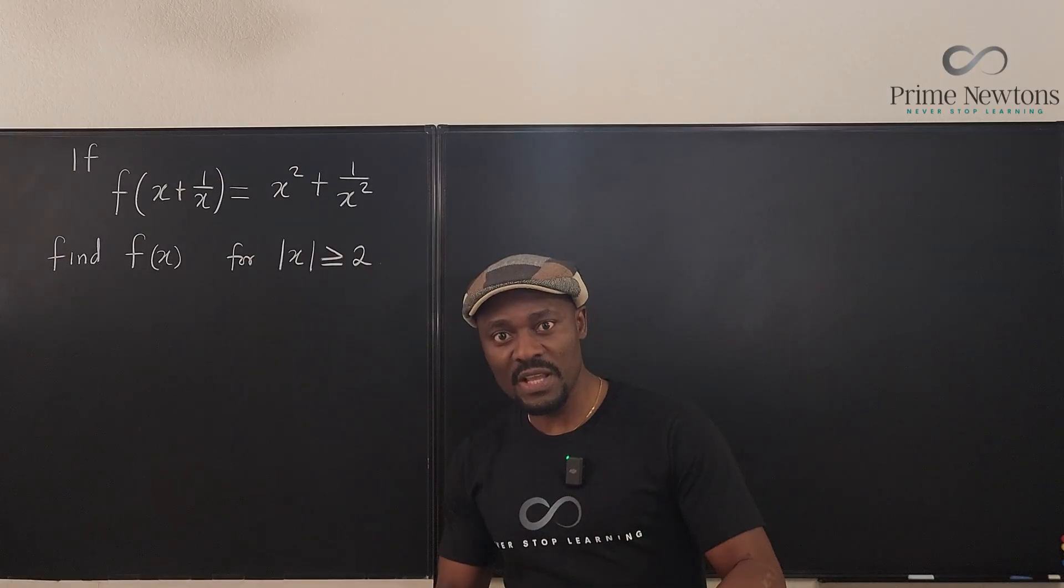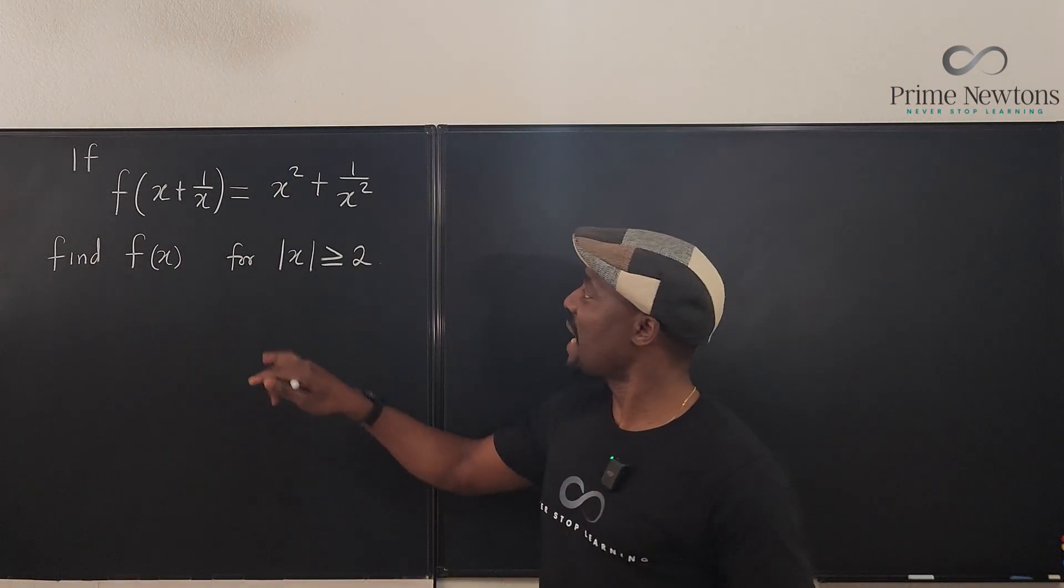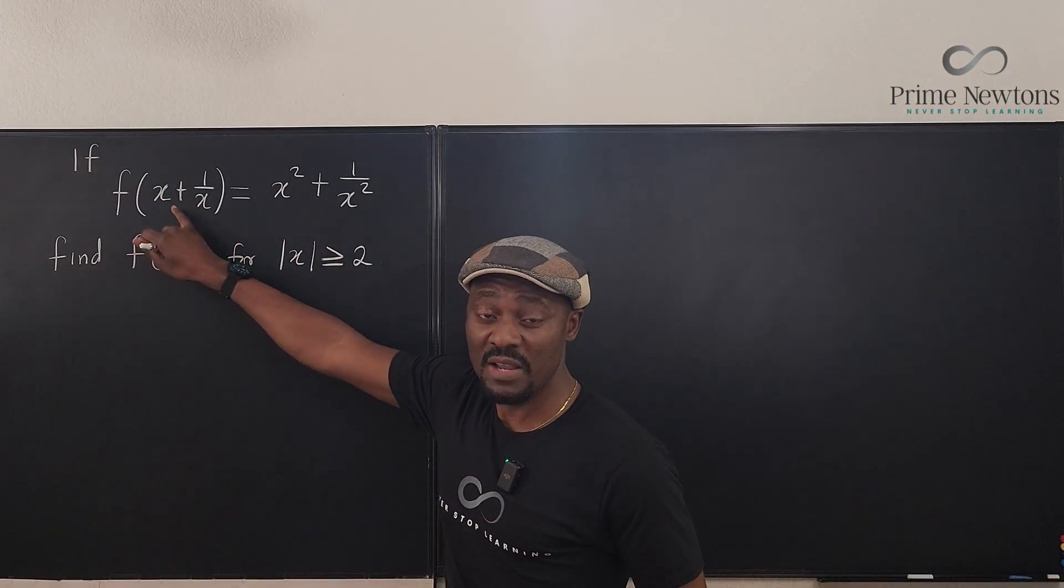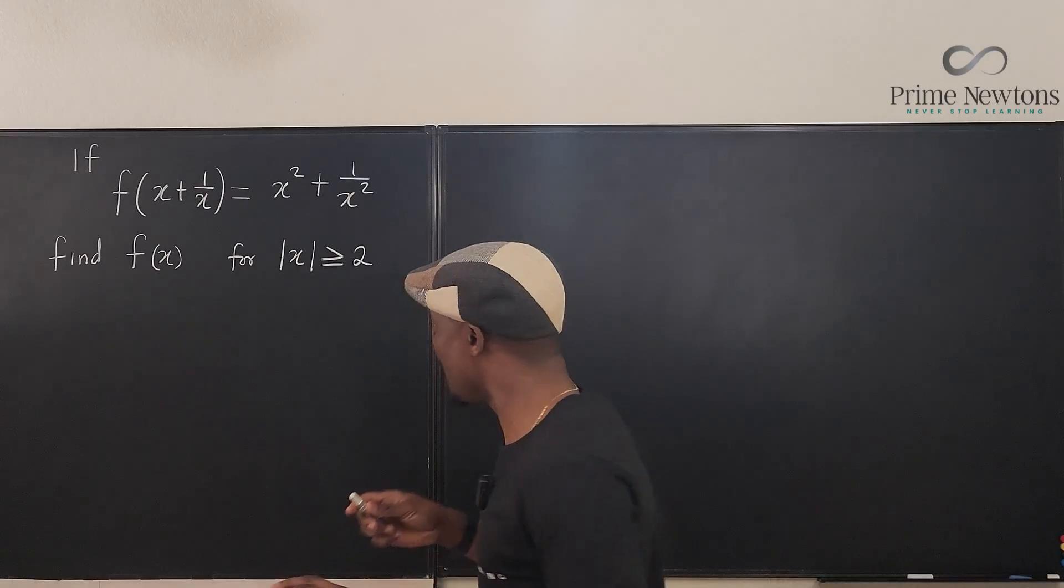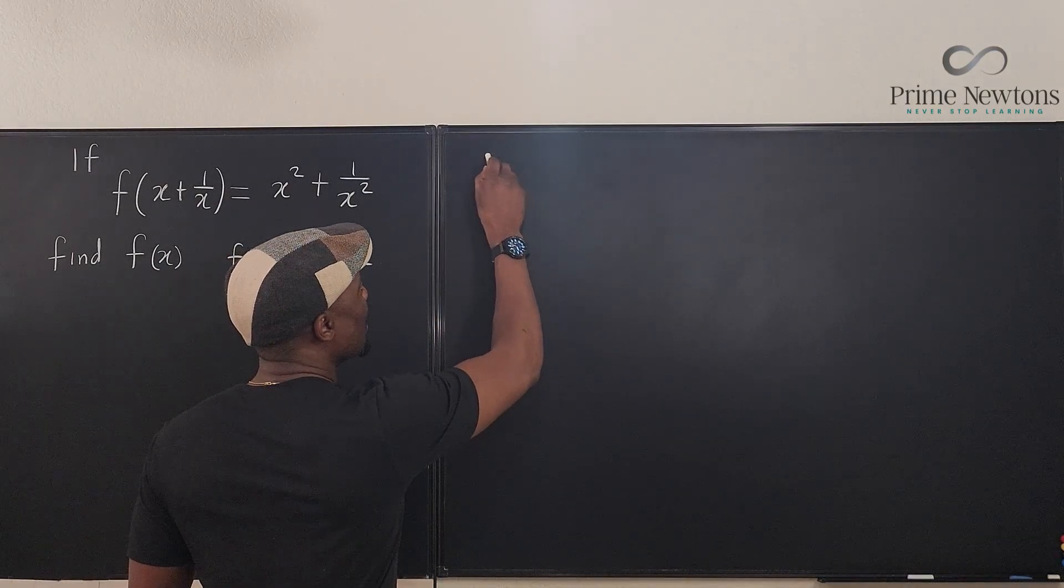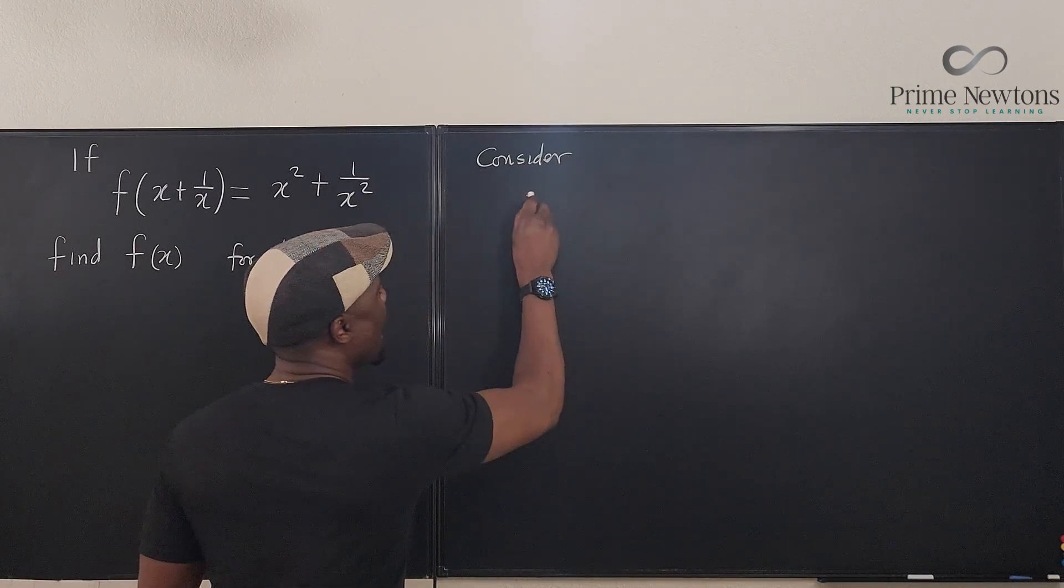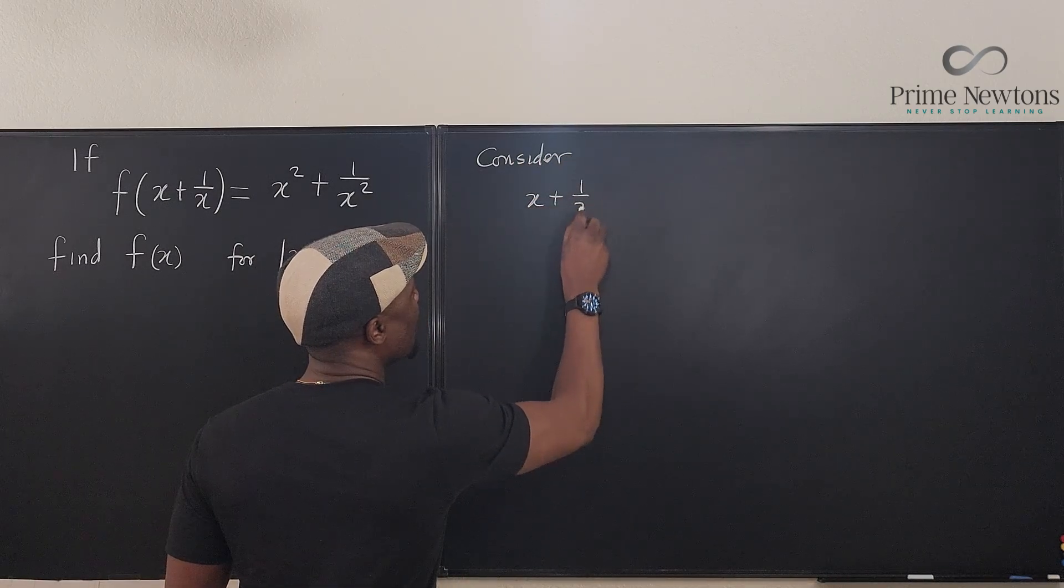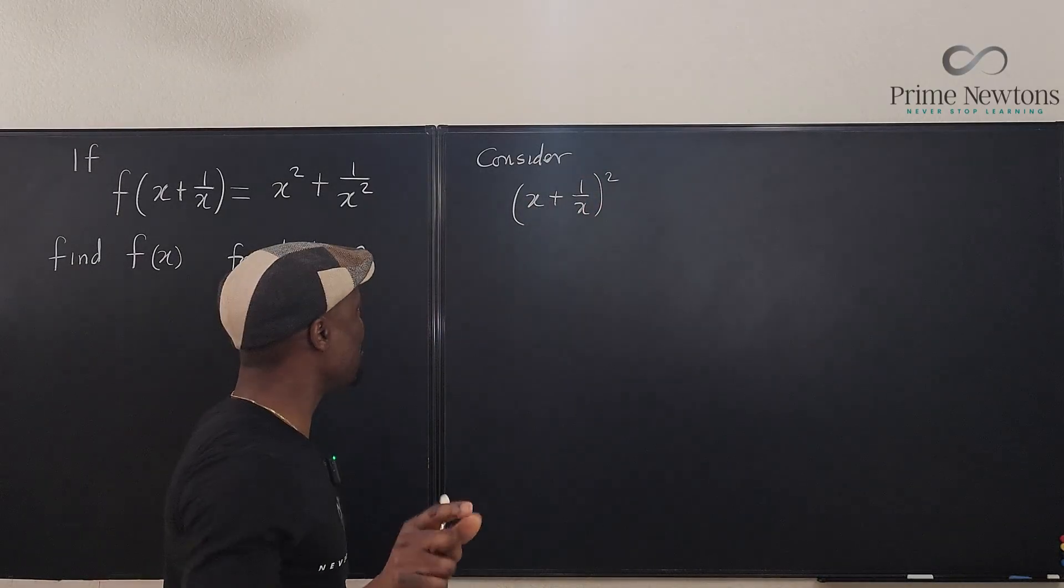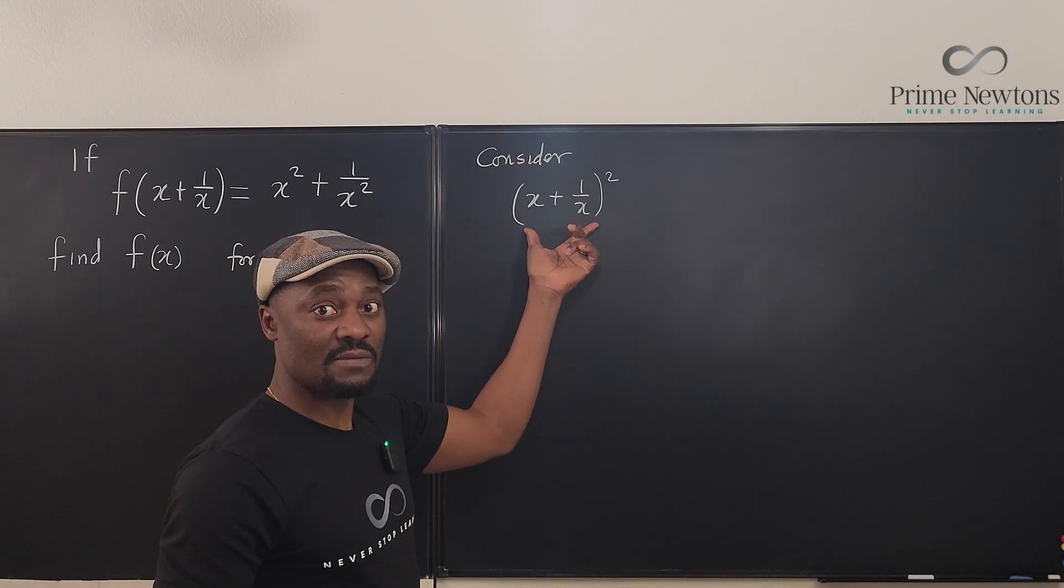So the first thing I'm going to do is, I've seen this before, because I know that you can generate this from this by squaring this argument. So what I'm going to do is, here, I'm going to say that, consider x plus 1 over x squared. I just want to see, because what I'm trying to do is, I'm trying to create this. I want to see if I can create it from here.